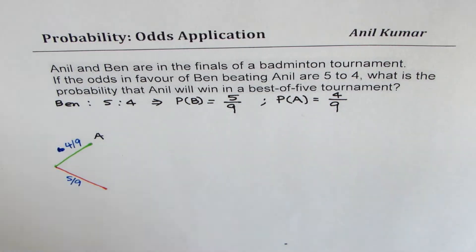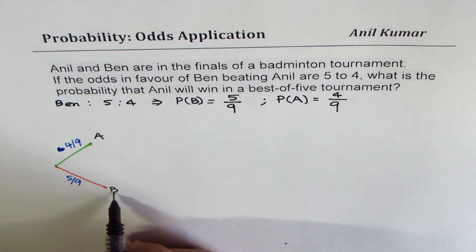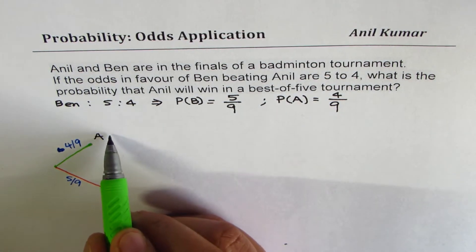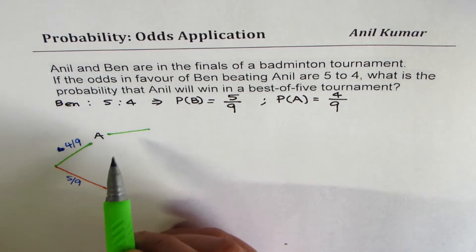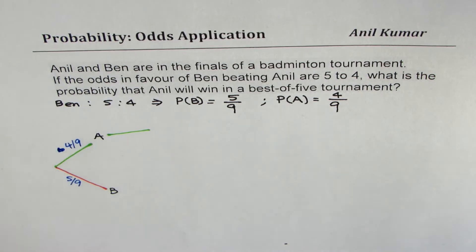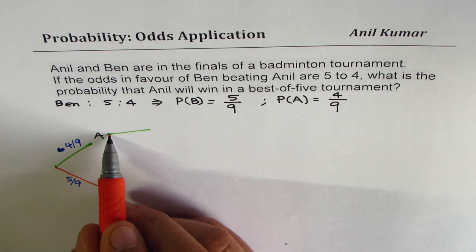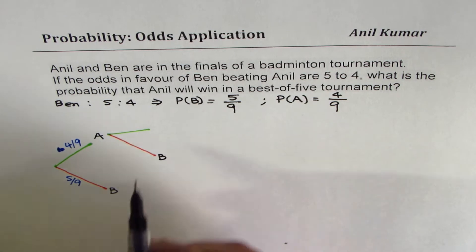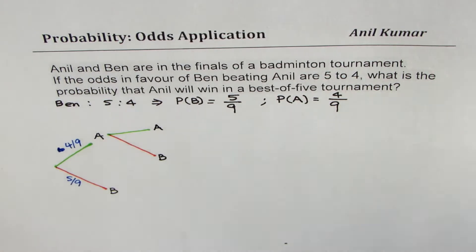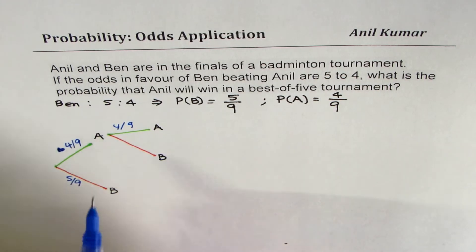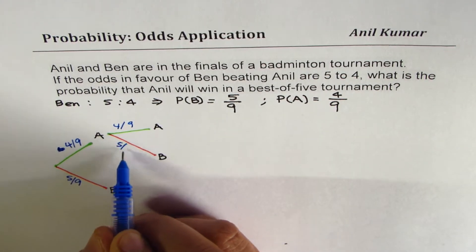For Ben to win, it is 5 out of 9. Now this is the first game — A and B. And now again, the second game. In that game, the probability for Anil to win will again be 4 out of 9. And there is also the possibility that Ben may win. So every time, either one of them can win the game — for Anil it is 4 out of 9, and for Ben it is 5 out of 9.